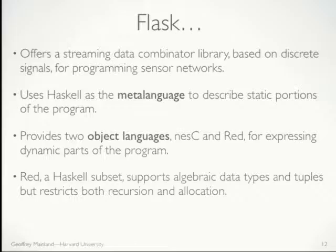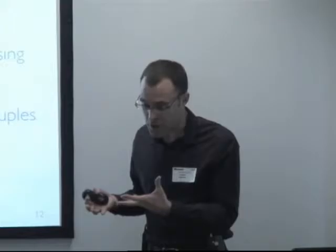What is Flask? Flask offers a high-level streaming combinator library, similar to Yampa, but targeted towards sensor network nodes. We use Haskell as the meta-language to glue program fragments running on individual sensor nodes together. We provide two languages to write program fragments that run on the sensor nodes: first, RED — a restricted form of Haskell that we can compile efficiently down to sensor nodes — and the other language is Nessie, which is the language people typically program this kind of device in, so we can interface with legacy code.